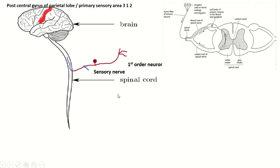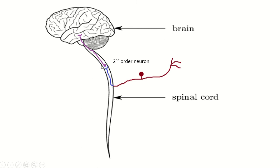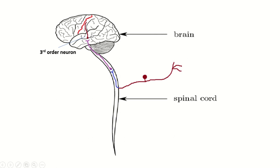The sensory information is transmitted through three sets of neurons. This is the first order neuron, this is the second order neuron. The axon of the second order neuron synapses with the third order neuron. The axon of the third order neuron is handed to the primary sensory area, the postcentral gyrus of the parietal lobe, area number 3-1-2. So this is the afferent fiber, this is the sensory nerve, and this is the ascending tract.